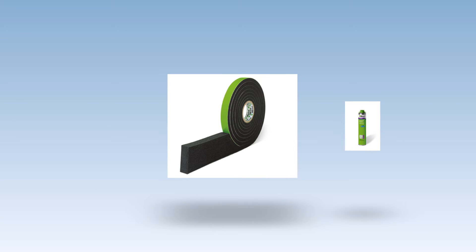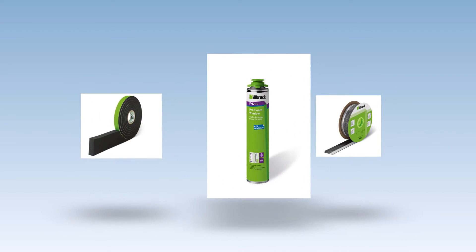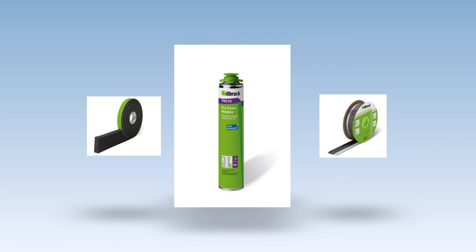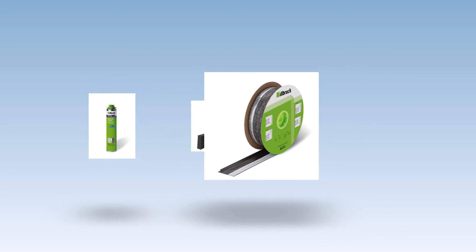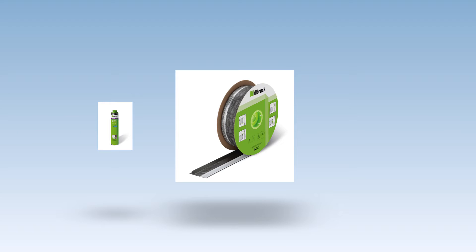The Ilbrook products to be used: Compreband TP600 impregnated tape as an external weather seal, FM230 Pro Foam Window for thermal insulation, and ME500 Duo Flexible Window Membrane to provide air tightness.